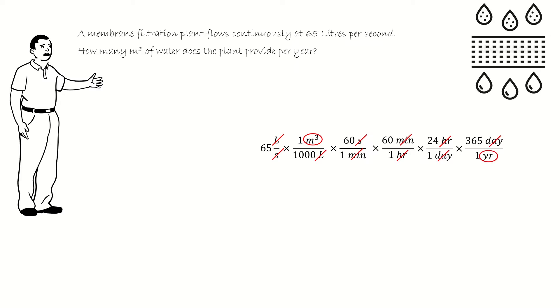65 divided by 1,000 multiplied by 60 multiplied by 60 again, multiplied by 24, and multiplied by 365 is equal to 2,049,840 cubic meters per year.